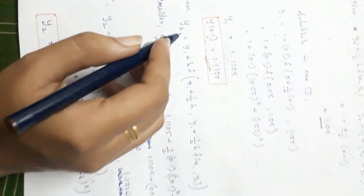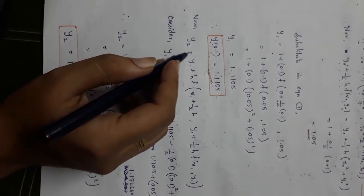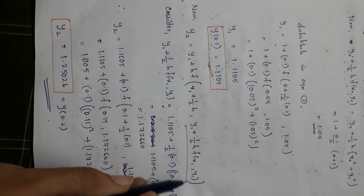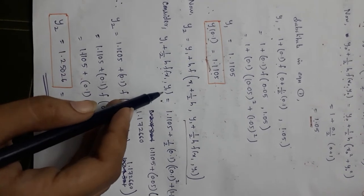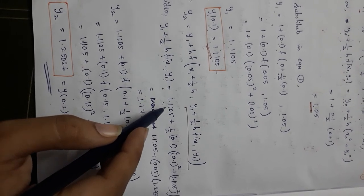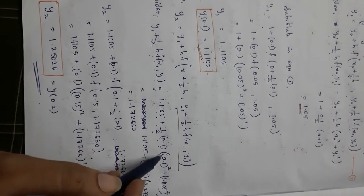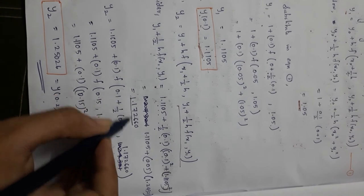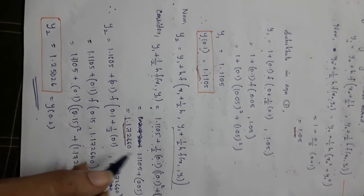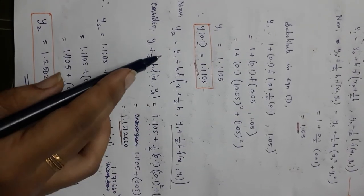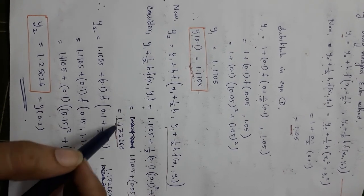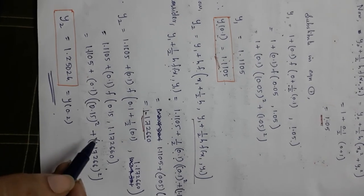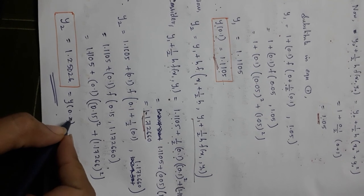To find y₂, compute y₁ + (h/2)·f(x₁, y₁) = 1.1105 + 0.05·(0.1² + 1.1105²) = 1.172660. Then substituting into the y₂ formula with x₁, h, y₁, and this value, we get y₂ = 1.25026. So y(0.1) = 1.1105 and y(0.2) = 1.25026. Thank you.